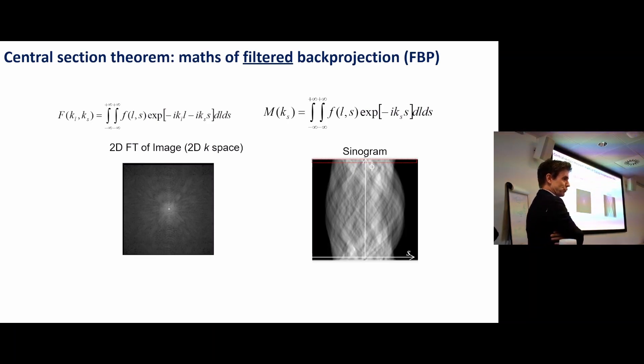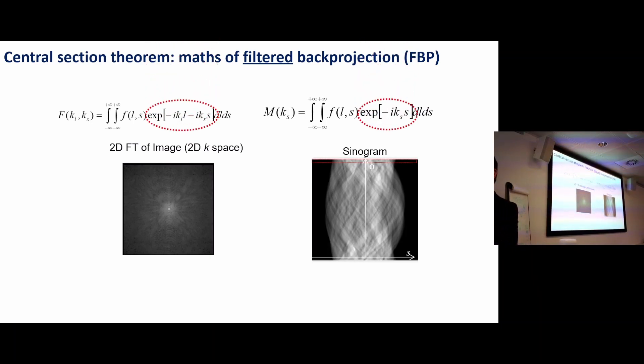If kl equals zero, then we get complete equality between the two expressions. So that tells us that a Fourier transform of one row of a sinogram is equal to a profile through the 2D Fourier transform of what we want.